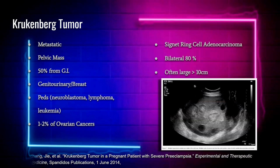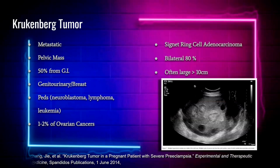It is of metastatic origin from signet ring cell adenocarcinoma. These are very rare adenocarcinomas that release mucin. They are often found as a very large pelvic mass; 80% of the time they are bilateral in both ovaries. 50% of these tumors arise or metastasized from the gastrointestinal tract, usually from a gastric or pyloric adenocarcinoma. They are often large, greater than 10 centimeters.